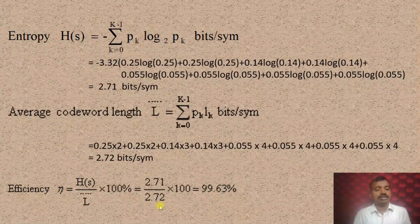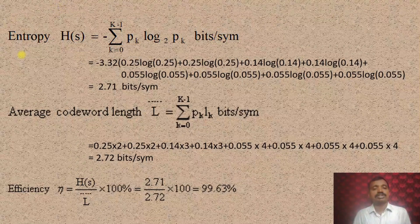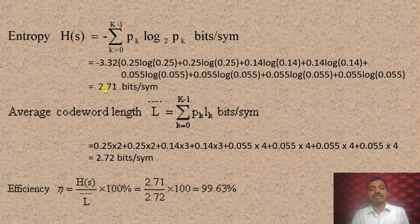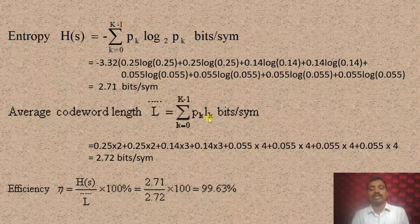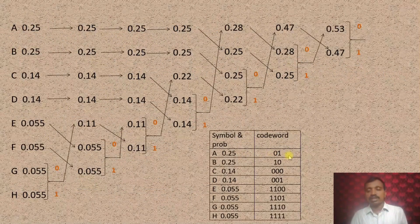Coding efficiency is represented by H(S) divided by L-bar, where H(S) is the entropy of the source and L-bar is the average code word length. The entropy represents the average information per symbol expressed in bits per symbol: H(S) = minus summation from k=0 to K-1 of p_k times log base 2 of p_k, in bits per symbol. You can use a calculator with log base 10 and multiply the result by 3.32. That gives 2.71 bits per symbol.